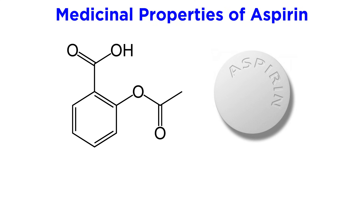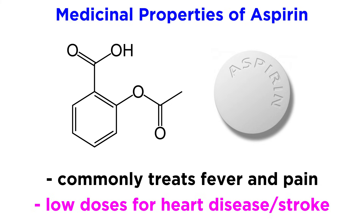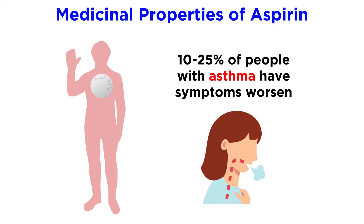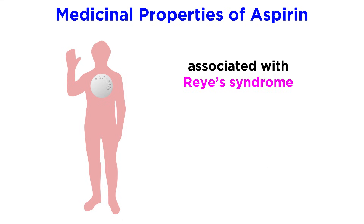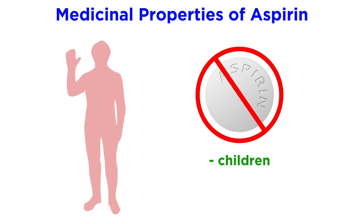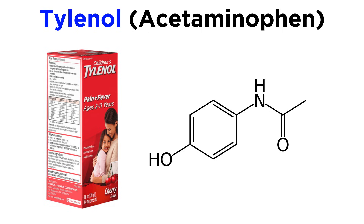The properties we've described make aspirin a potent and clinically important NSAID for the treatment of not only fever and pain, but also in low dose for heart disease or patients who have had a stroke. Despite its many uses, certain patients can display a hypersensitivity to aspirin — 10 to 25% of people with asthma have their symptoms worsened by its use. Additionally, aspirin has been associated with Reye's syndrome, which occurs primarily in young people and is characterized by swelling of the liver and brain. Due to this association, aspirin is not used in children or young adults with a virus-induced fever. However, acetaminophen, commonly known as Tylenol, has not been implicated in Reye's syndrome and has less significant gastric side effects, making it the drug of choice for the treatment of fever in children and young adults. So let's move forward and take a look at this substance next.